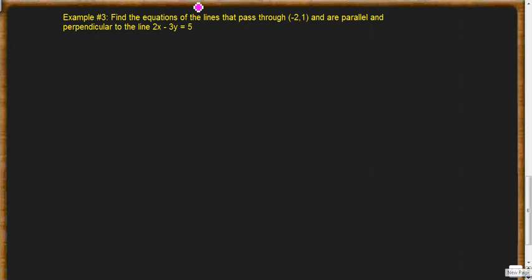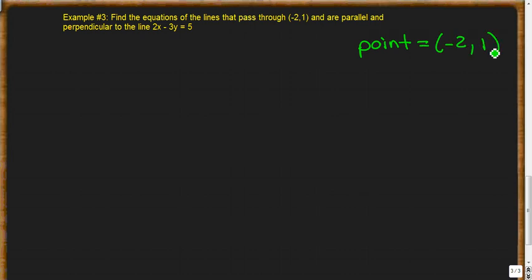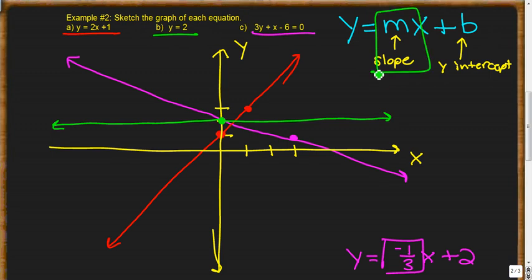The last example asks us to find equations of lines passing through (-2, 1) that are parallel and perpendicular to the line 2x - 3y = 5. We're given our point, which is (-2, 1). What we don't have is our slope, so we need to find it. The slope is whatever number is attached to x when we get y isolated on one side.